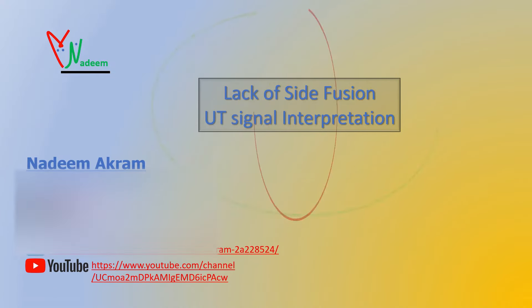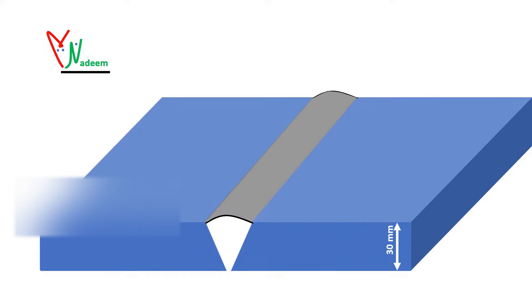In this video I will explain how to interpret the UT indications obtained from weld imperfection. I will talk about the interpretation practices and techniques which are used in UT to categorize the weld defect as a lack of sidewall fusion. We'll briefly touch on the amplitude response from the defect at various probe positions.